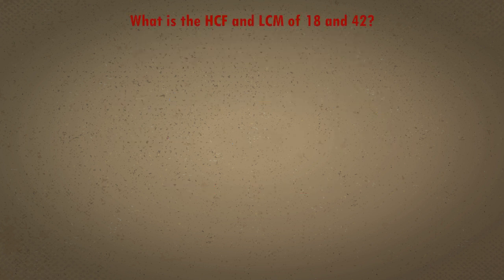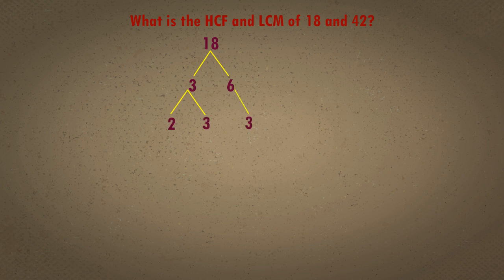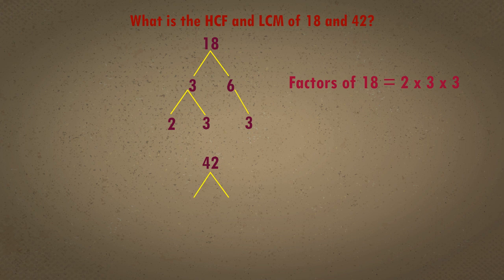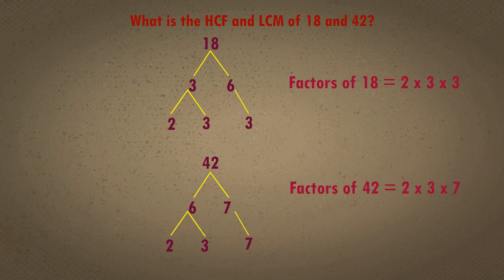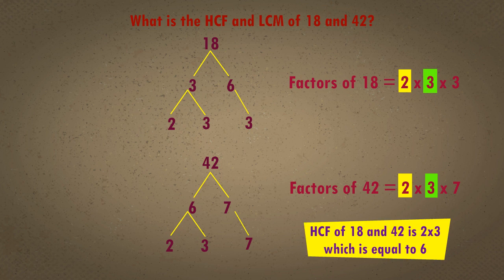Example 1: What is the HCF and LCM of 18 and 42? Let us find the HCF first. Factors of 18: 3 × 6 = 2 × 3 × 3. Factors of 42: 6 × 7 = 2 × 3 × 7. The factors that are common to both numbers are 2 and 3. Hence, the HCF of 18 and 42 is 2 × 3 = 6. Let us find the LCM now.